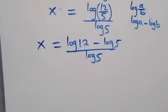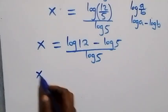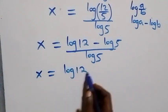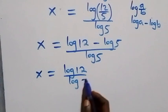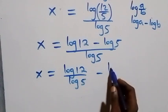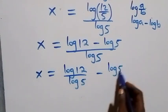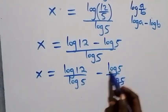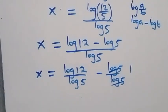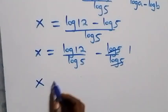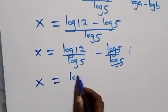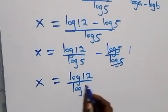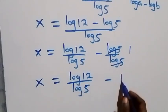Here we separate this into two fractions: x equals log 12 over log 5, then minus log 5 over log 5. Log 5 cancels in the second fraction, giving 1, so this becomes x equals log 12 over log 5 minus 1.